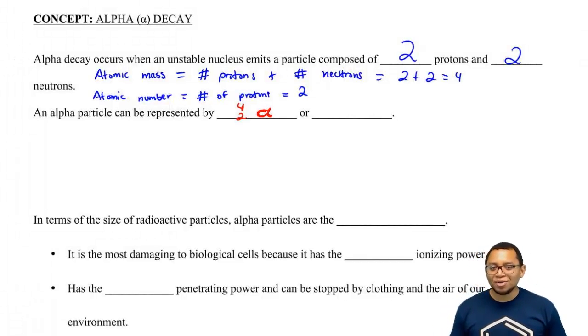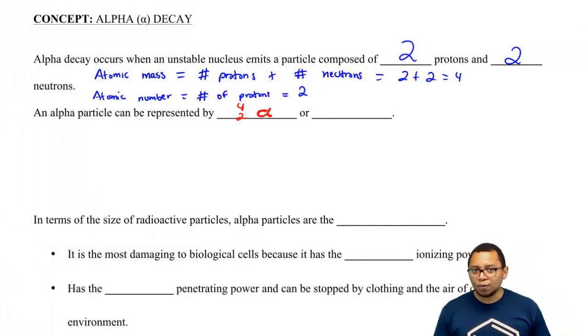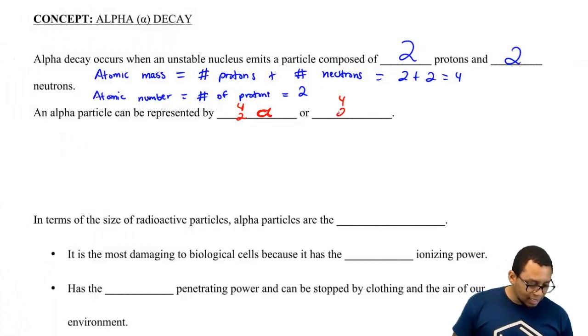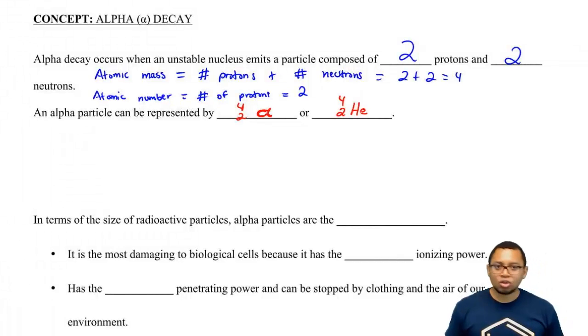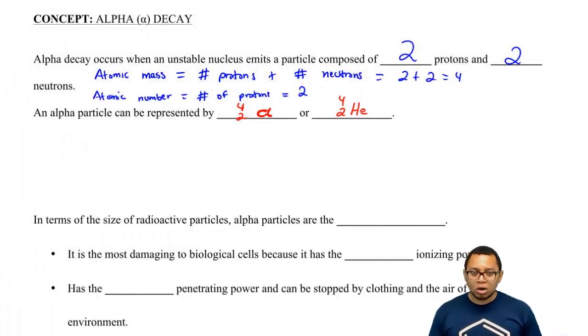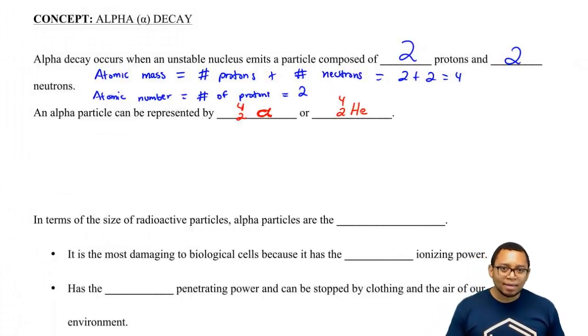Now on our periodic table, we have an element that also has an atomic mass of 4 and an atomic number of 2. That element is helium. So the alpha particle can also be represented by helium, because helium has the same atomic mass and atomic number as an alpha particle.